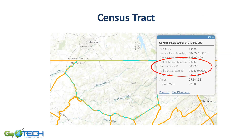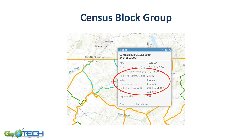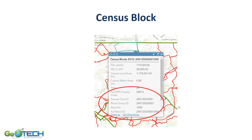Here is an example showing a census tract outlined in green with the full FIPS code 24013 — where 24 is Maryland and 013 is Carroll County — combined with the census tract ID to form the full census tract ID. Within that census tract is a census block group, and you can see how the FIPS county code, block group ID, and block ID combine all the way down to the full block ID.